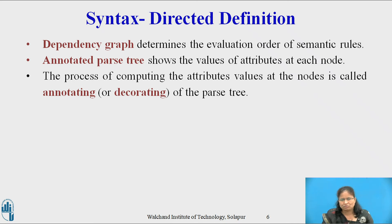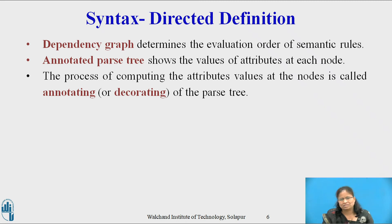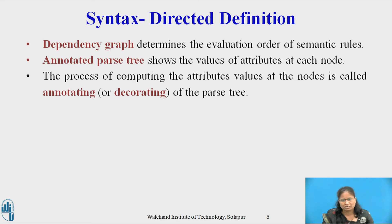Evaluation of a semantic rule defines the value of an attribute, but a semantic rule may also have some side effects such as printing a value. A parse tree showing the values of attributes at each node is called an annotated parse tree, and the process of computing the attribute values at the nodes is called annotating or decorating the parse tree. The order of these computations depends on the dependency graph induced by the semantic rules.